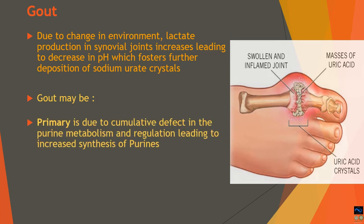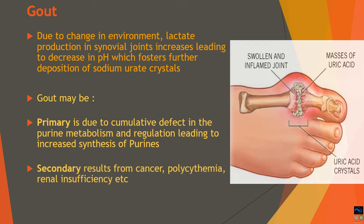Gout is classified as primary and secondary. Primary gout is due to a cumulative defect in purine metabolism and regulation, leading to increased synthesis of purines and hence increased degradation, resulting in overproduction of uric acid. Secondary reasons include degradation of cancerous cells, polycythemia, or renal insufficiency, where the kidneys are not able to handle the uric acid load. All these defects lead to hyperuricemia and hence gout.